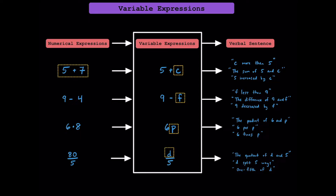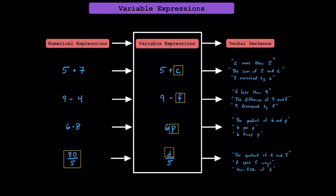In this specific scenario, C was equal to 7. Here, F was equal to 4. Here, P is equal to 8. And here, D is equal to 80. However, in other problems, these variables could represent different numbers.